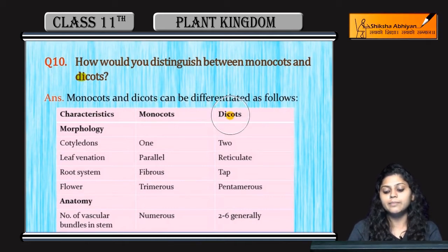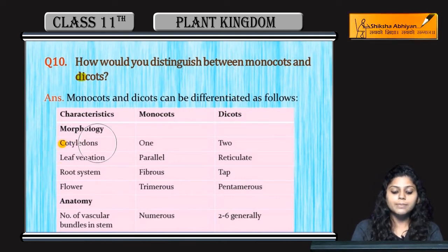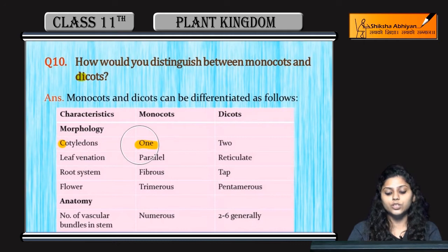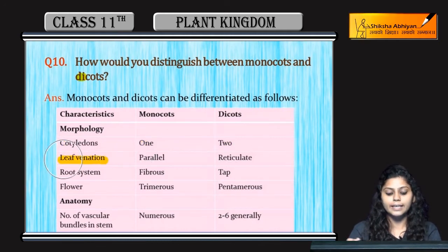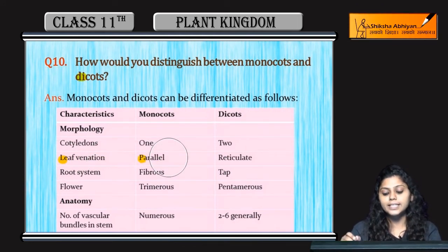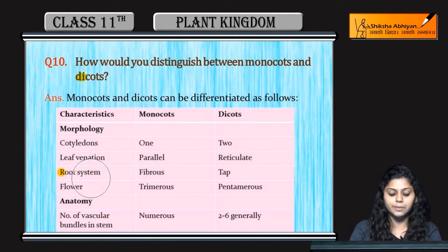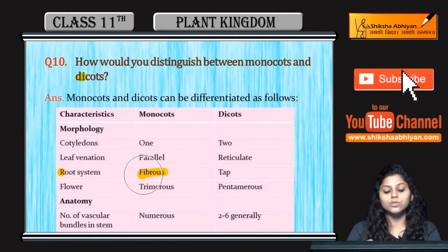Cotyledons: monocots have one cotyledon and dicots have two. Talking about morphology, leaf venation in monocots is parallel — I'll show you on the next slide how parallel venation looks — whereas in dicots it is reticulate.